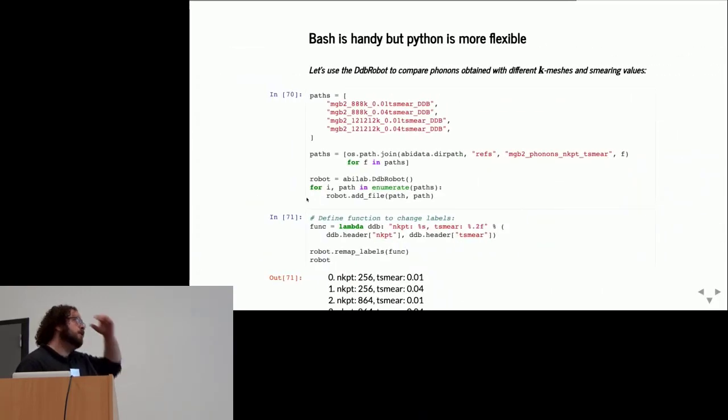The shell is powerful and I use it a lot when I have to debug, but there are things that are much easier to implement in Python. Here I want to show an example related to the so-called DDB robot, an object that we use to perform convergence studies. I have four DDB files computed for MgB2, a metal phonon-mediated superconductor. These DDB files were obtained with different k-meshes and different values of the smearing, and I want to analyze the convergence behavior and how the phonon frequencies are affected by these parameters.